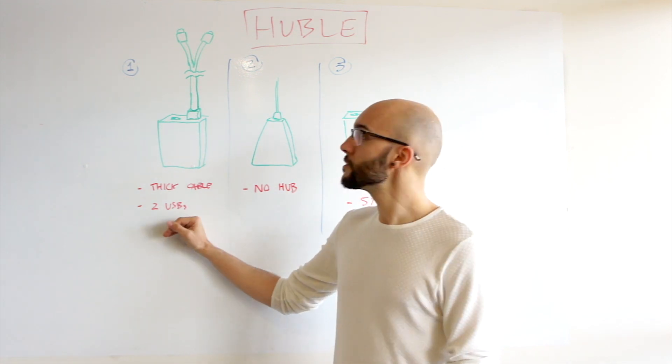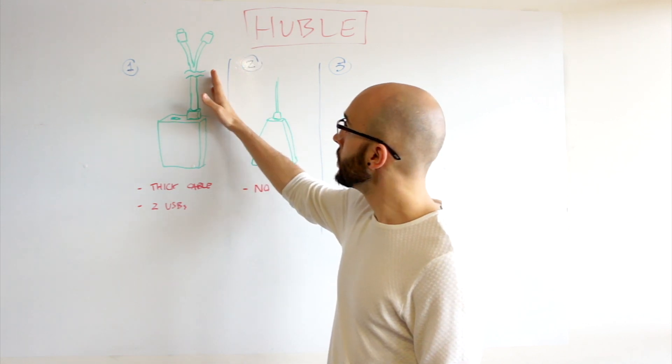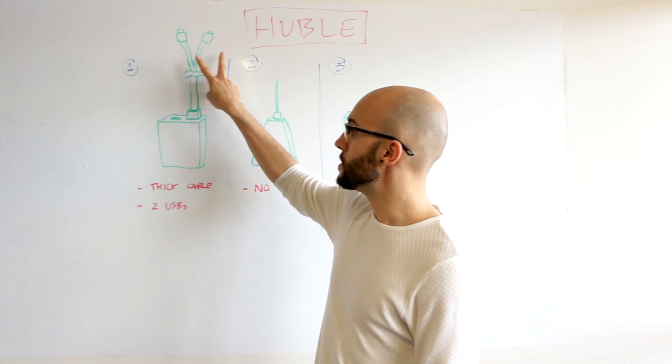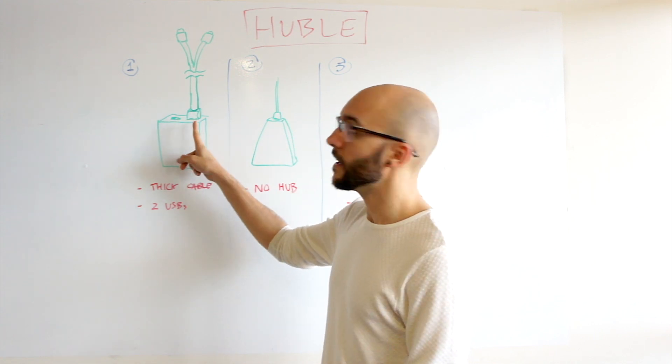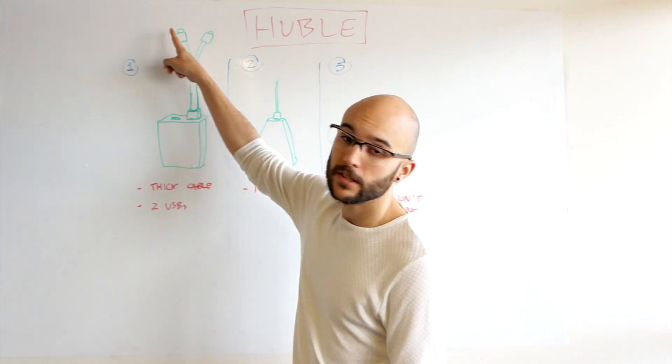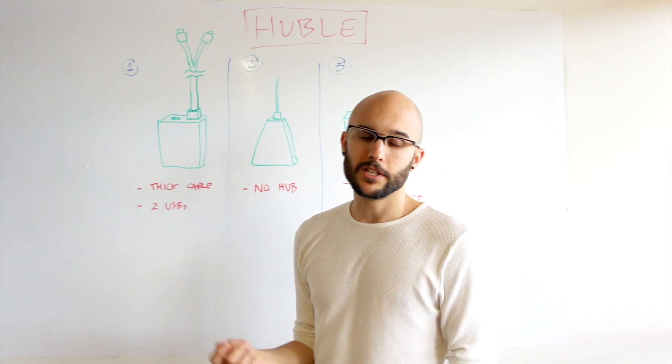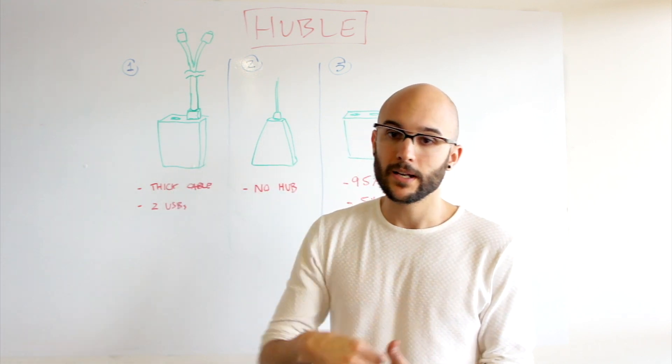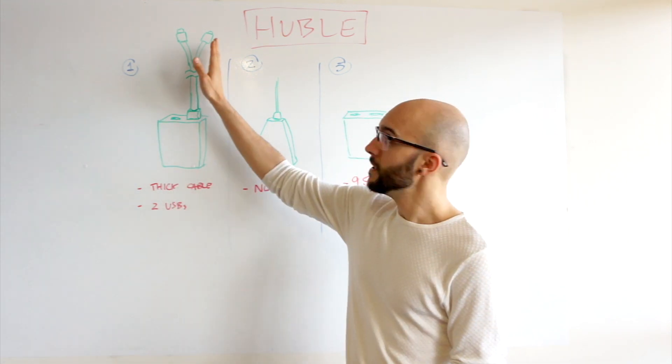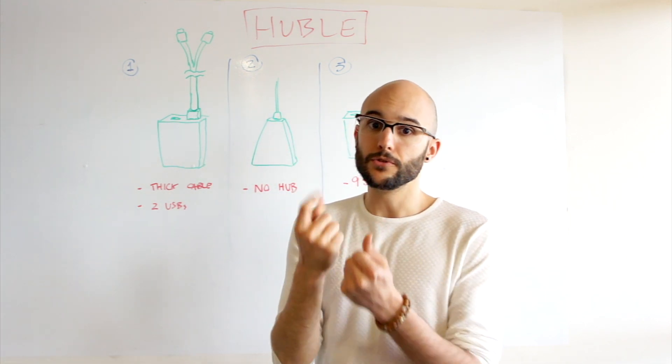So the first option would be to have a thicker cable that ends in two USBs. So basically this, instead of being a hub, will be like an extensor. So you will have one cable that is used for the RAZE and then you will use the other cable for whatever you plug. And what this would mean is that we will be able to draw more power because you're using two USBs instead of one.